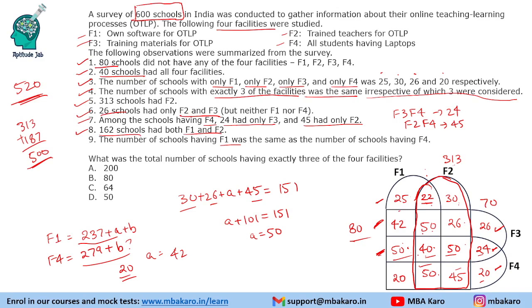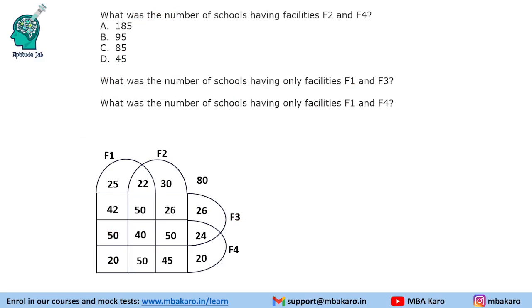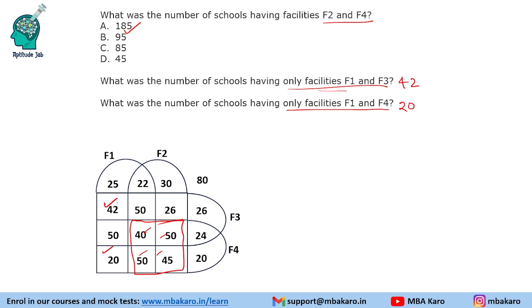We can now answer all four questions. Q1: The total number of schools having exactly 3 of the 4 facilities is 50 × 4 = 200. Q2: The number of schools having facilities F2 and F4 (the word 'only' is not used, so we include all common regions) is 100 + 40 + 45 = 185. Q3: The number of schools having only F1 and F3 is 42. Q4: The number of schools having only F1 and F4 is 20. That completes the solution to this set.